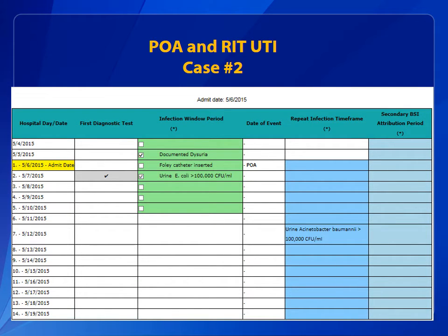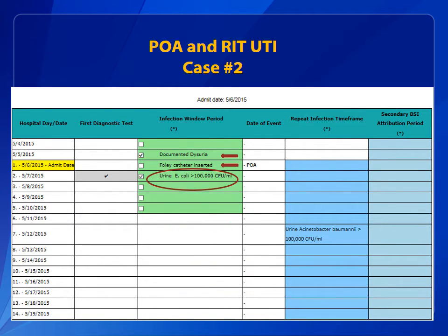A patient complaining of chest pain is transferred from a nursing home to the emergency room on May 5th. The nursing home documents dysuria on May 5th. The patient is admitted on May 6th and a Foley catheter is inserted. On May 7th, the urine tests positive for more than 100,000 CFUs per milliliter of E. coli. For this case, what is the UTI determination?